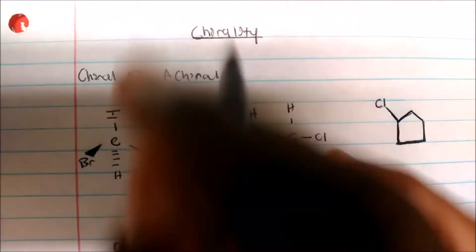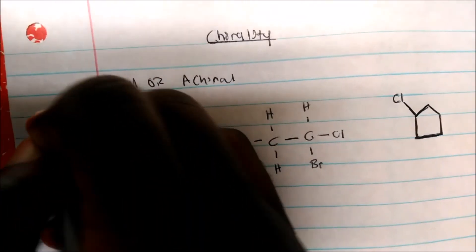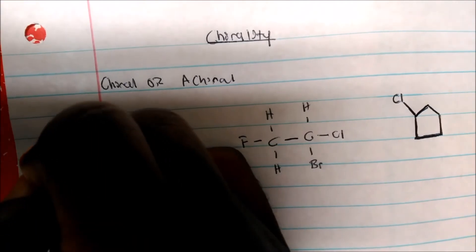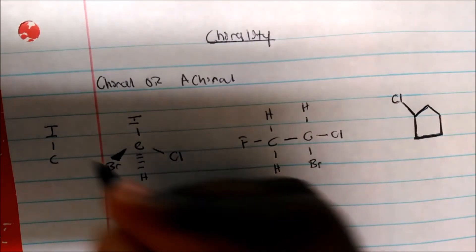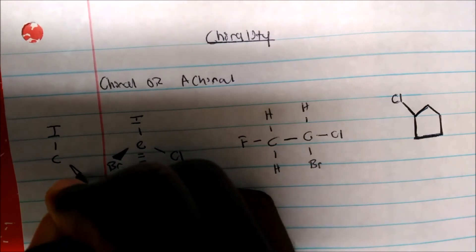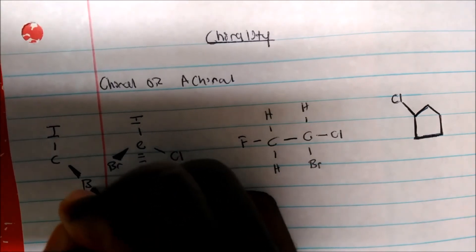All right, so let's see if I could put it on the side, but iodide will be right here. Bound to this chlorine, well, bond to that carbon, and then our bromine will be over here.